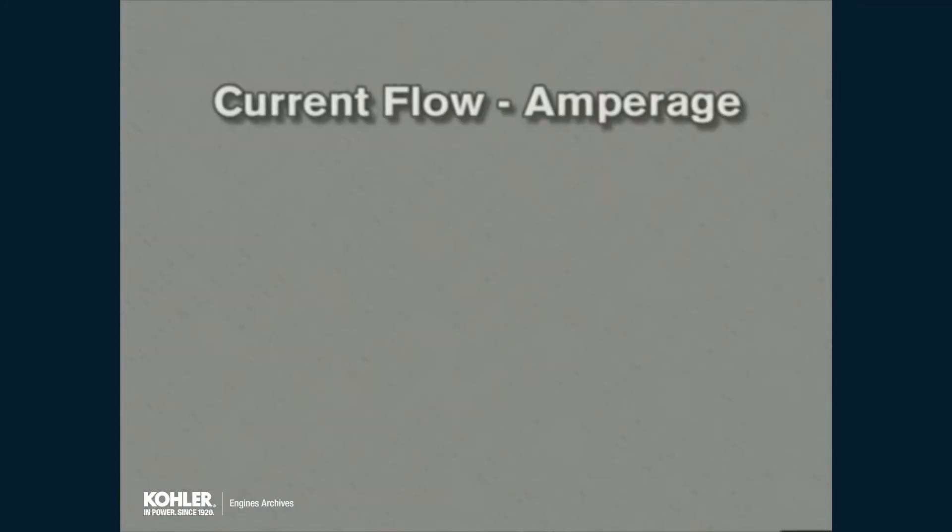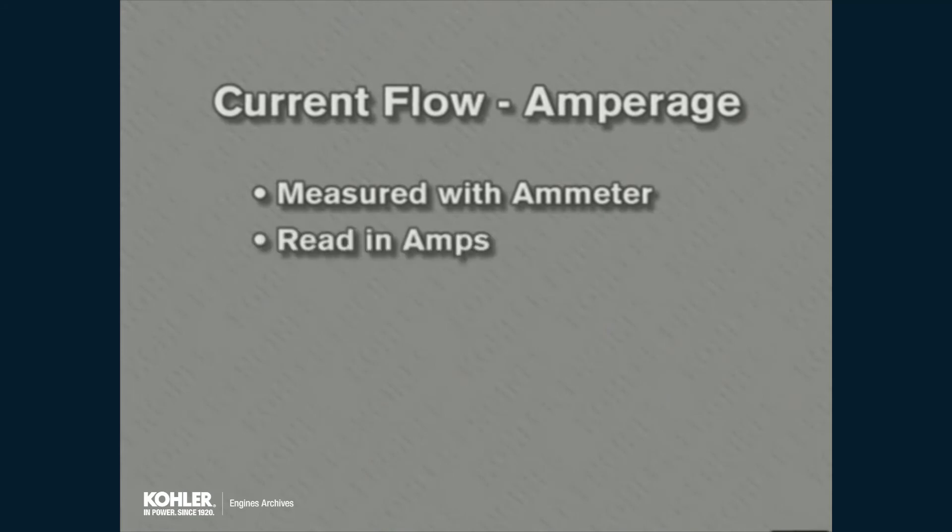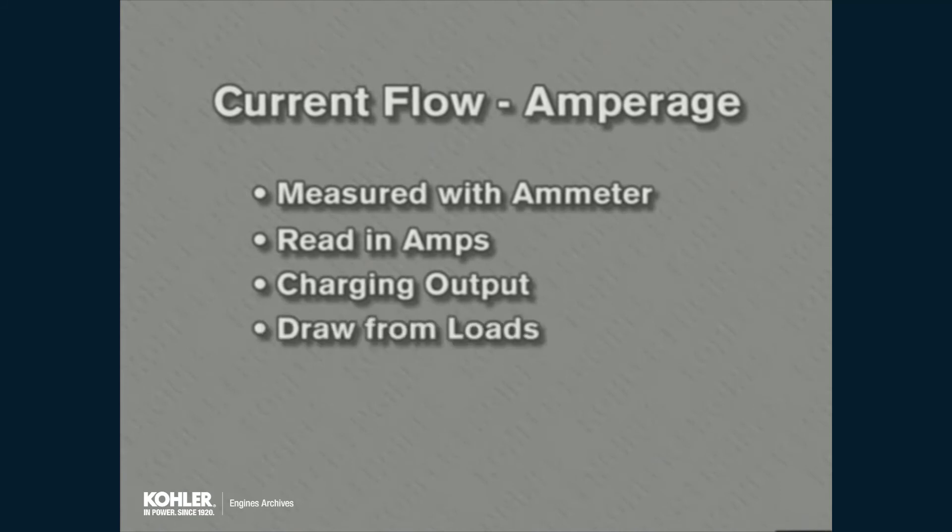Current flow, or amperage, is measured with an ammeter, and the value measured is read in amperes or just amps. Current flow measurement could be output from the charging system or current draw from electrical loads.